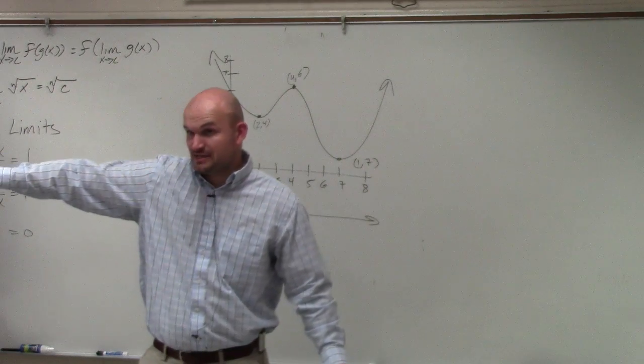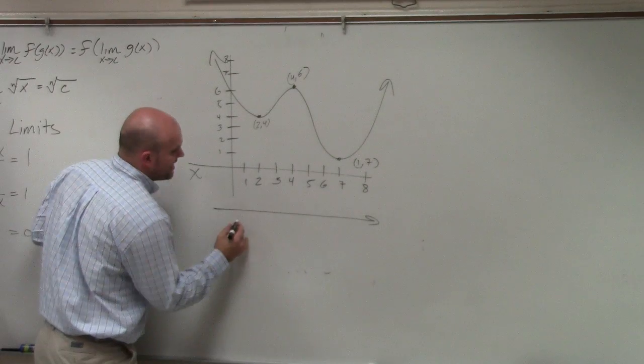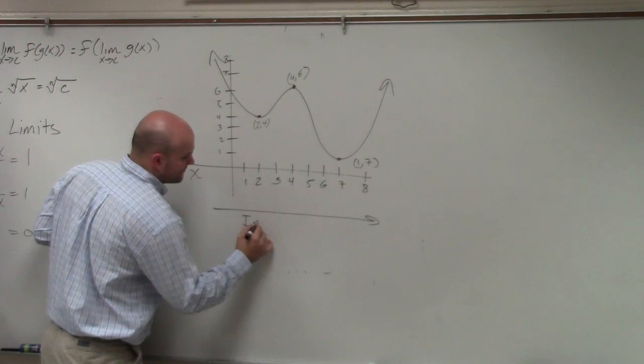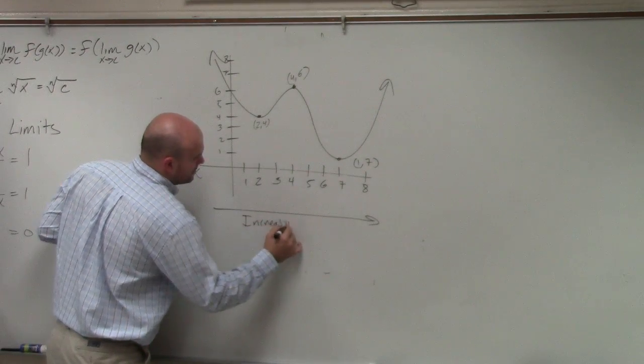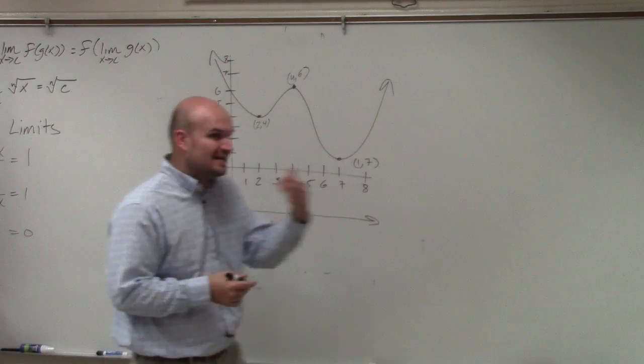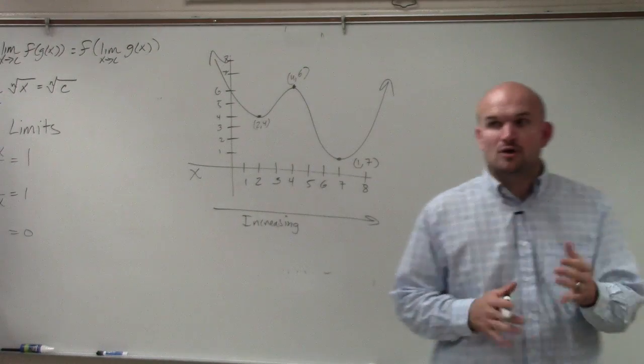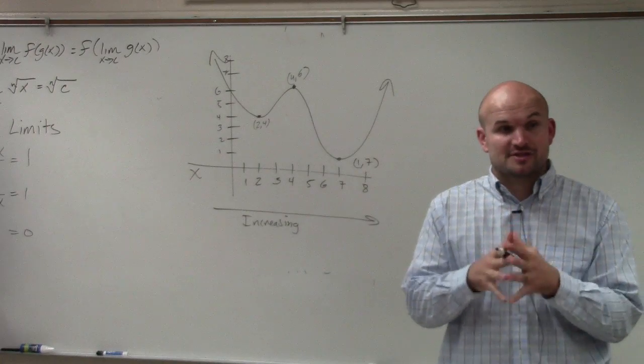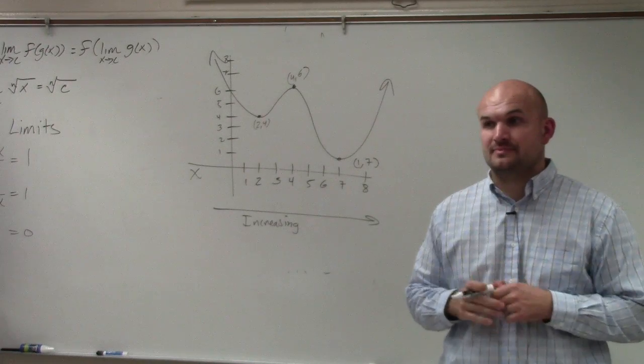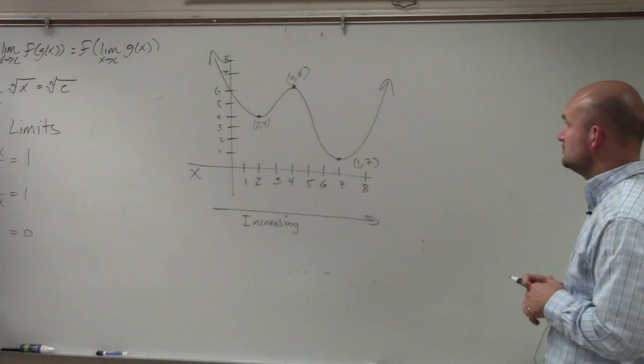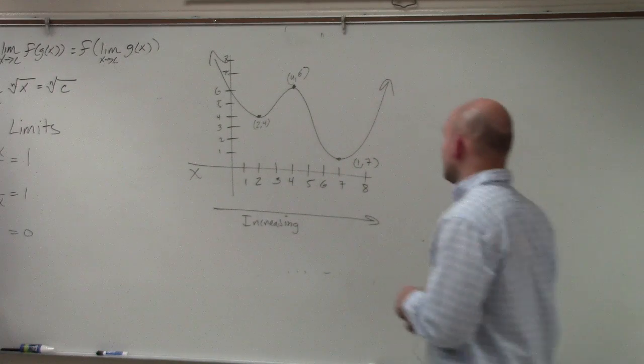So each value, it's increasing and decreasing. Let's find the values where a graph is increasing. When we're reading increasing intervals, we're only talking about the x values the graph is increasing at. Yes? It is 7 comma 1. Thank you.